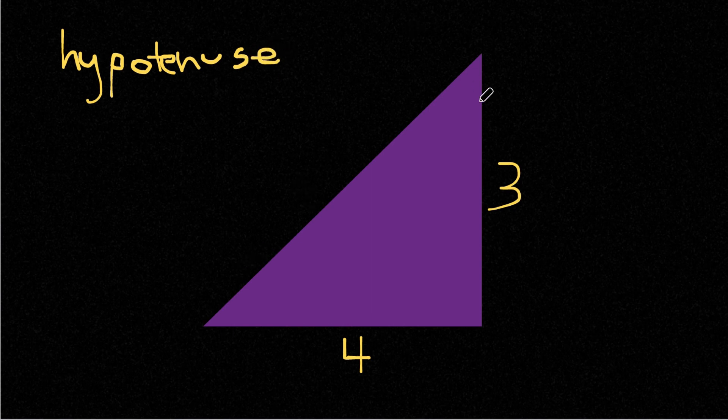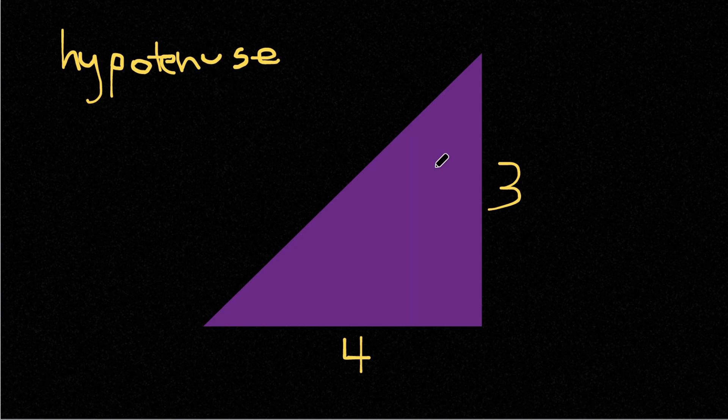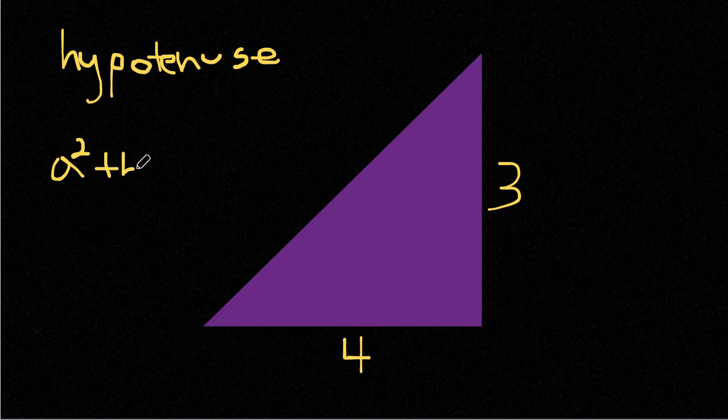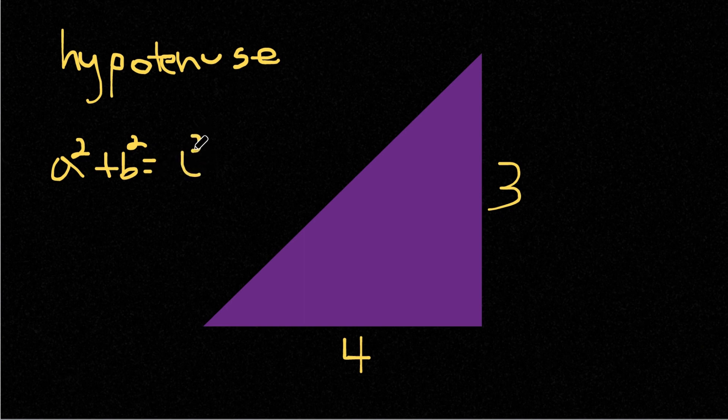So the formula or theorem to finding a missing side in a right triangle is a squared plus b squared equals c squared. C in this case is our hypotenuse, our longest side of our triangle.